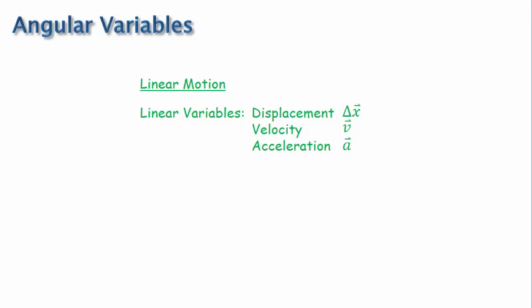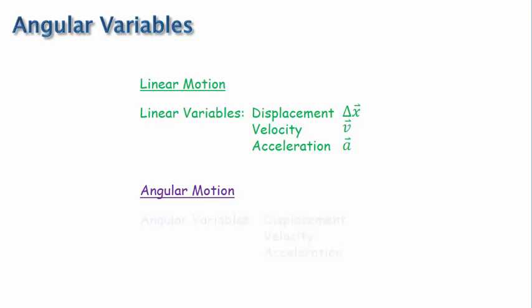The motion we've discussed up to this point in the course is called linear motion, and the variables we have used are linear variables for displacement, velocity, and acceleration. We refer to rotating motion and motion around a circular path as angular motion. We similarly have angular variables for displacement, velocity, and acceleration.